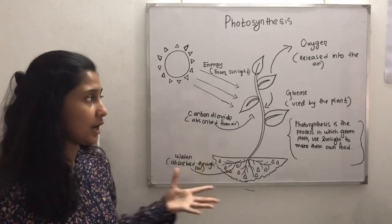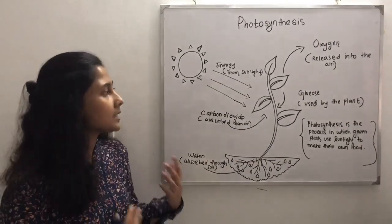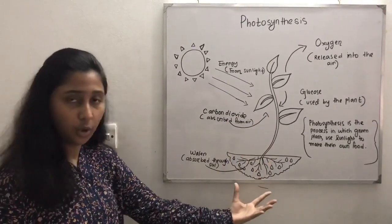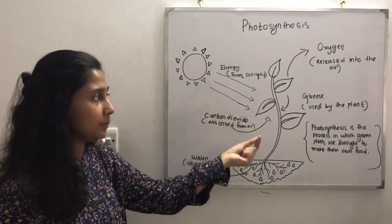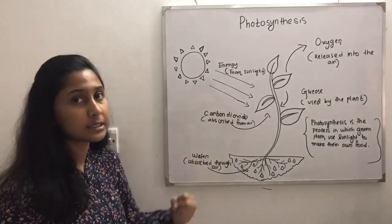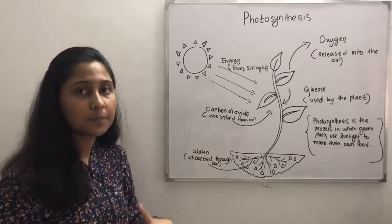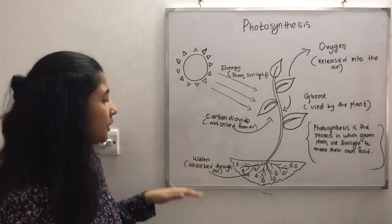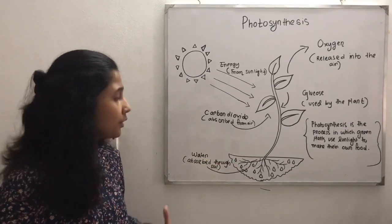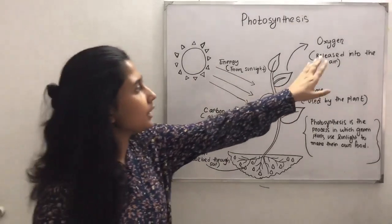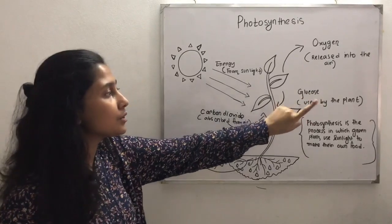I've drawn a diagram showing the entire process of photosynthesis. Here's a plant in soil and the Sun — energy from the Sun is going to the plant, which absorbs the sunlight. Carbon dioxide is also absorbed by the plant from the air. Water is absorbed through the soil. Oxygen is released into the air, and glucose is used by the plant.